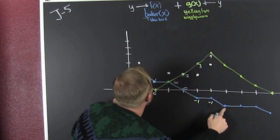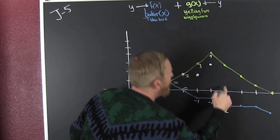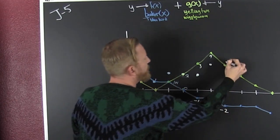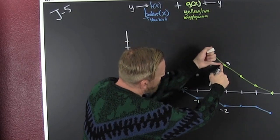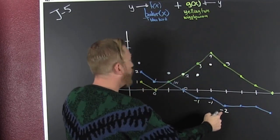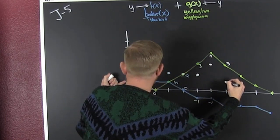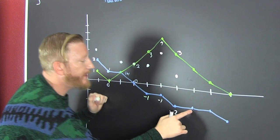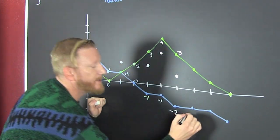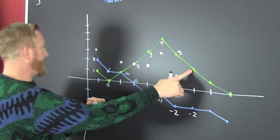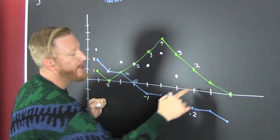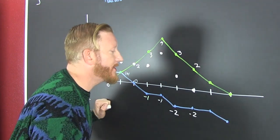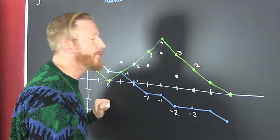So here, Booker is minus 2 and Yellington is 3. So 3 plus a minus 2 is 1. Here, Booker is still minus 2 and Yellington is 2. So minus 2 plus 2, that's 0, so we put a dot right there.